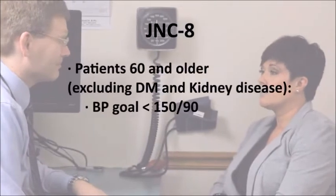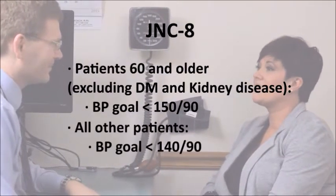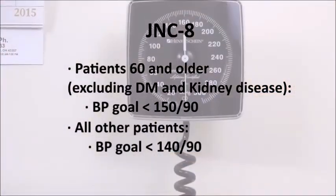In the outpatient setting, blood pressure is measured indirectly. It is important to use proper techniques so that readings are consistent and reliable. According to JNC8, patients 60 and older who do not have diabetes or kidney disease need to have blood pressure under 150 over 90. For all other patients, the blood pressure goal is less than 140 over 90.